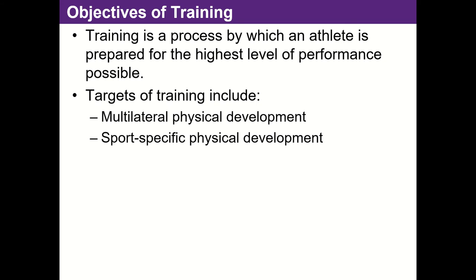Building upon that, once they've got this base where they are pretty athletic — fairly agile, fairly fast, somewhat powerful — then we can start working on more sports-specific physical development. We can look at the specific strength, endurance, speed, or flexibility needs of a particular sport. Some sports are pure strength, like powerlifting, where competitive events are squat, bench press, and deadlift. Some are more power, like the high jump or long jump. Some are endurance based, like triathlon or cross-country running.